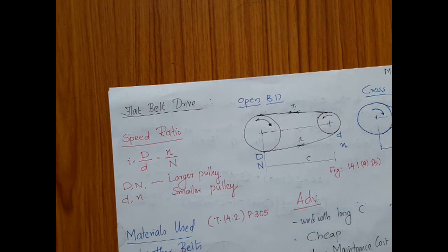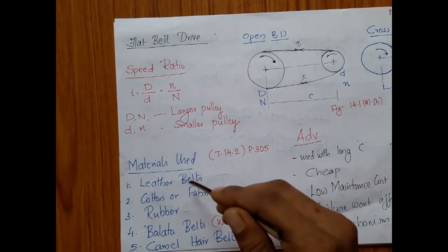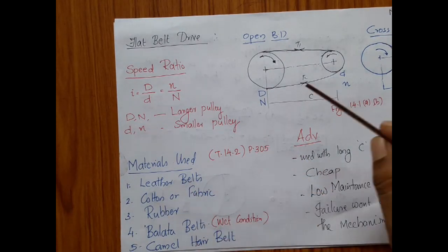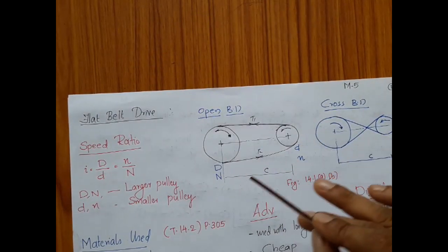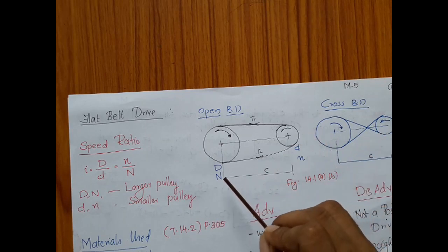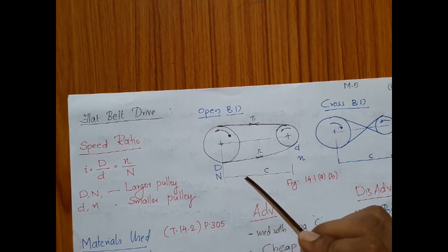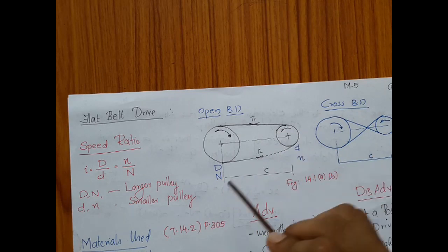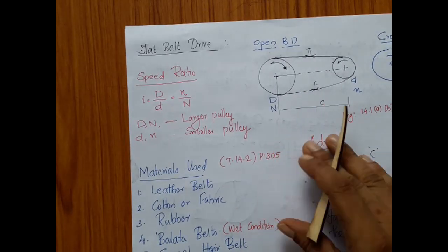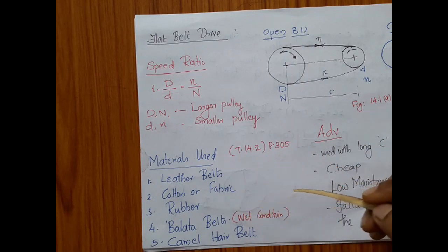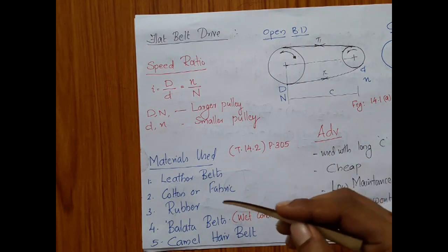Now let us discuss the various materials used in belt drives — that is, the materials used for the fabrication of the belt. All the letters and nomenclatures I will discuss here are the same as those in your data handbook. I haven't changed anything; whatever nomenclatures are used in the design data handbook by Mahadeva and Balaveddy, the same are used here — capital D, capital N, and all those things.